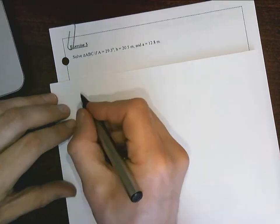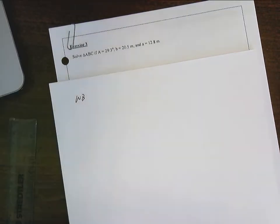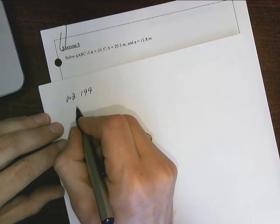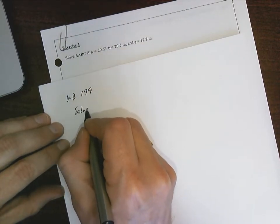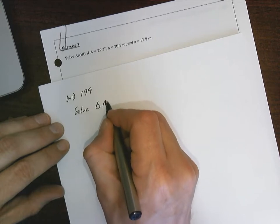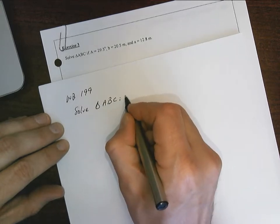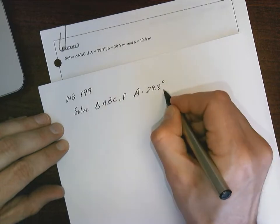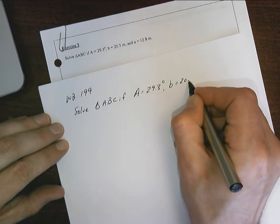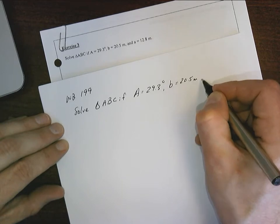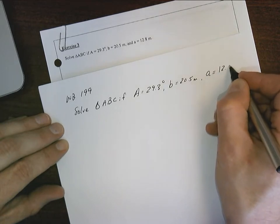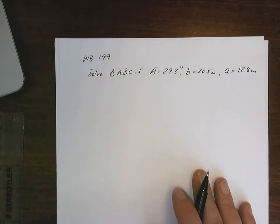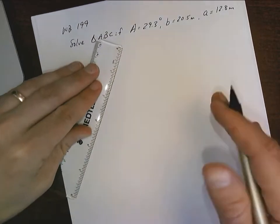Hello, so this is workbook 199. And again, I'm going to put it on my own paper. So we're going to solve triangle ABC if angle A is 29.3 degrees, side B equals 20.5 meters, and side A equals 12.8 meters. So again, I'm making an assumption that a triangle can be made.